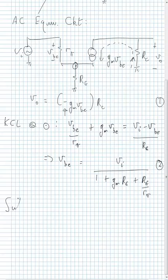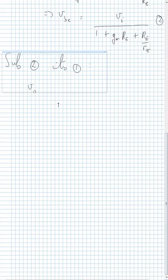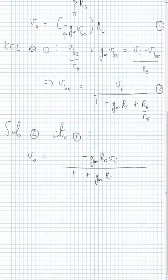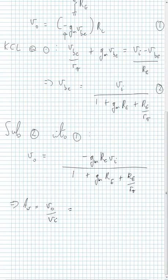The next step is to substitute expression 2 into expression 1. Doing that, the output voltage is minus Gm*RC*VI divided by (1 + Gm*RE + RE/Rpi). In other words, the gain VO/VI is approximately equal to minus Gm*RC divided by (1 + Gm*RE).